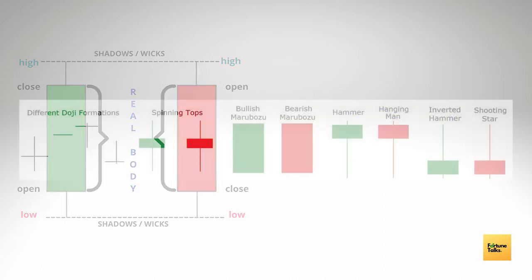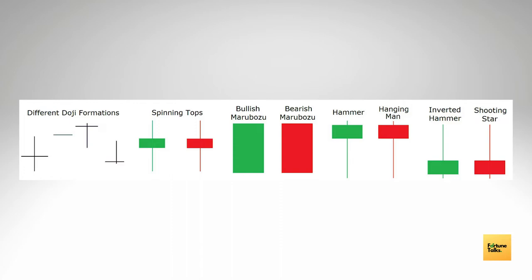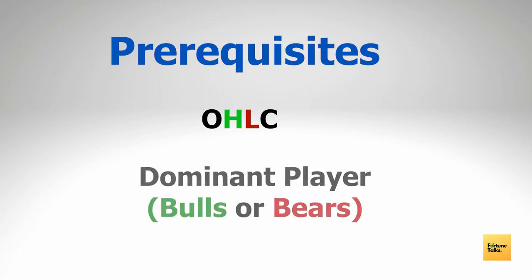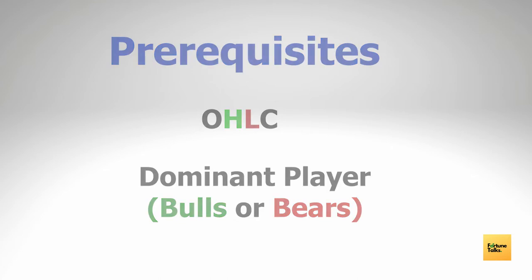The longer the real body, the more bullish or bearish the candle is. There are so many candlestick patterns out there — engulfing candlesticks, shooting stars, hammers, spinning tops, dojis, etc. — and learning all of them would seem very hard and confusing. But we have an easier way to understand what each candlestick means. All you need to understand is just two things: number one, the OHLC of the candles, and number two, figuring out who is more dominant — the bulls or the bears — at a particular time period.